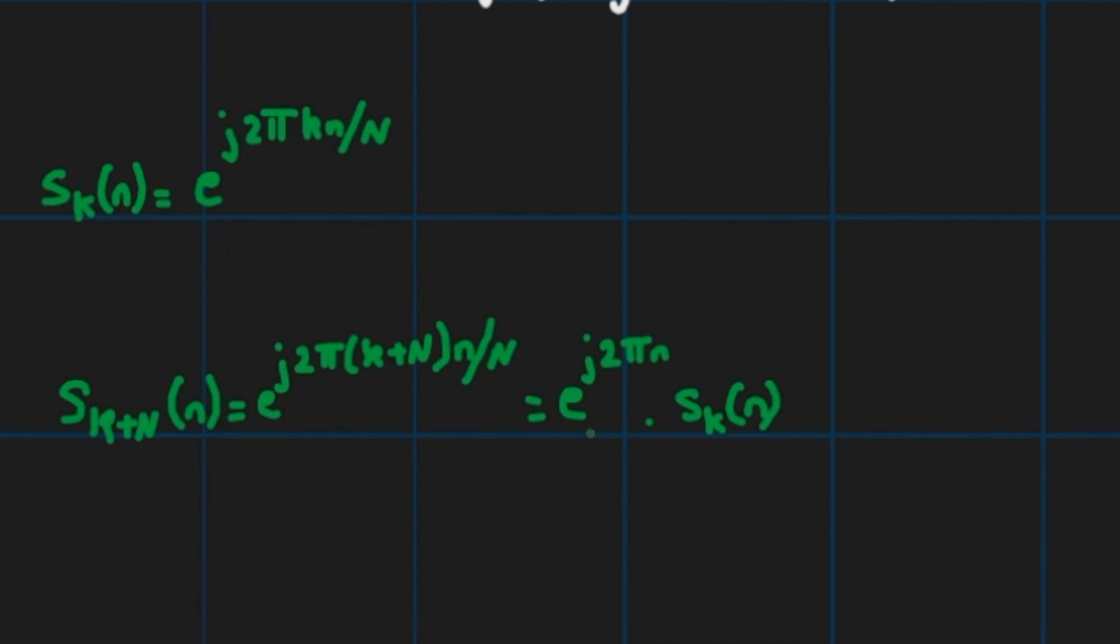Now what can we say about e^(j2πn)? This guy is a 1, because it's cos(2πn) + j·sin(2πn). We know that cos(2πn) is always 1 and sin(2πn) is always 0. So this guy is a 1 and hence we get s_k(n).